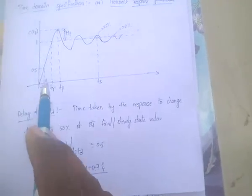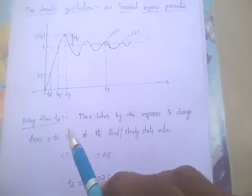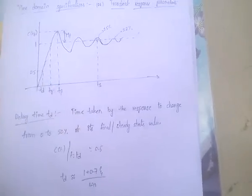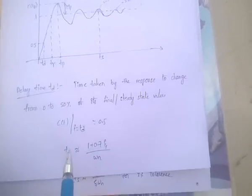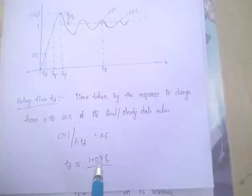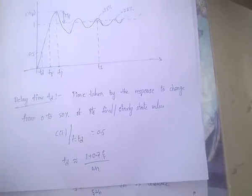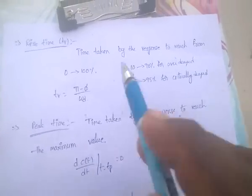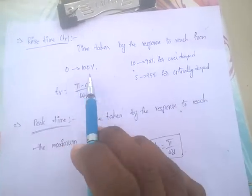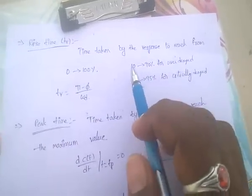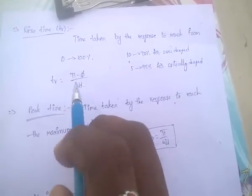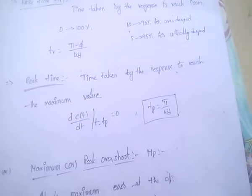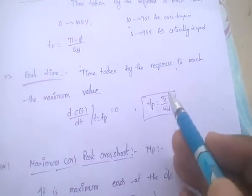Formulas for each parameter: Delay time Td ≈ (1 + 0.7ζ) / ωn. Rise time TR = (π − φ) / ωd, where for the over-damped system it is 10% to 90%, and for the critically damped system it is 5% to 95%. Peak time Tp = π / ωd.